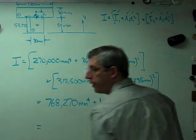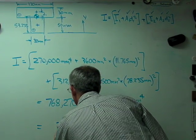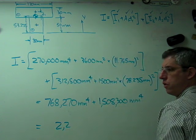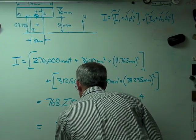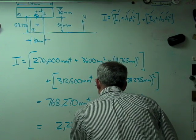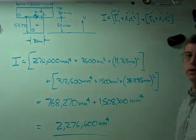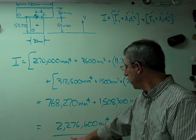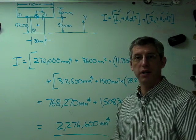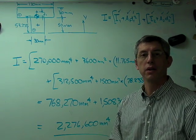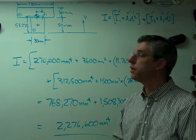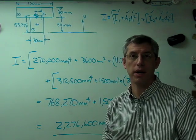And finally, just add those together. And there's your answer. So 2,276,600 millimeters to the fourth is the area moment of inertia of that composite shape.